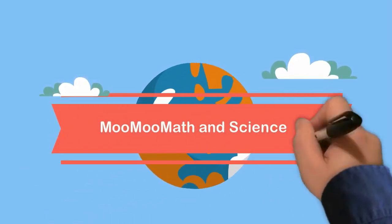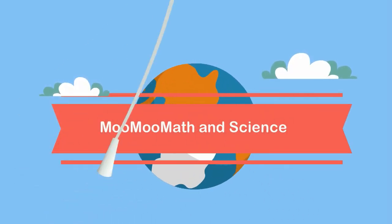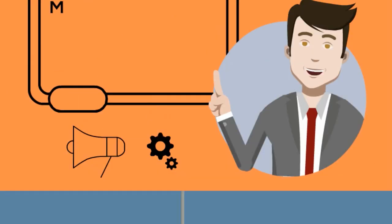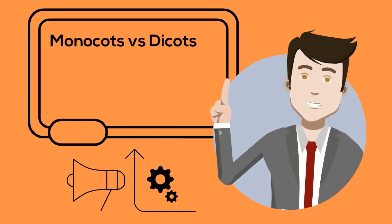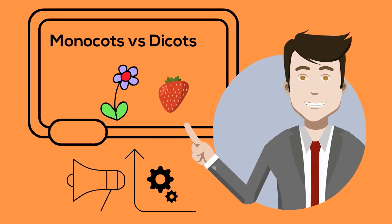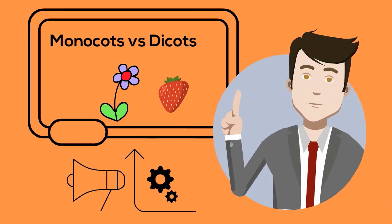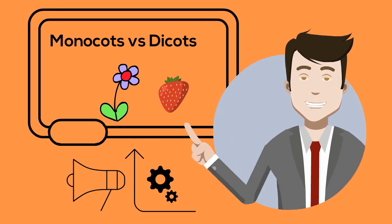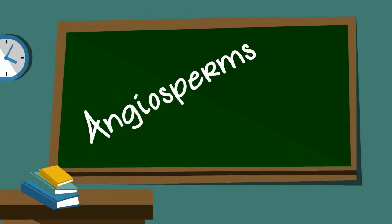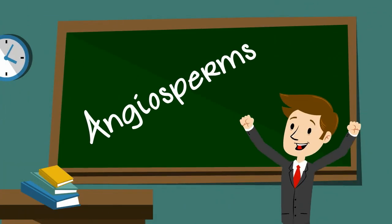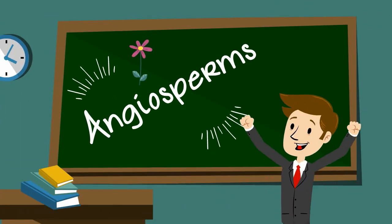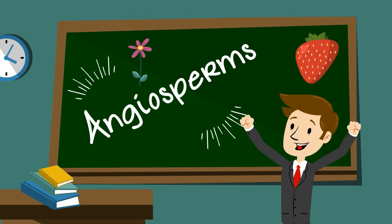Welcome to MooMooMath and Science. In this video I would like to talk about the difference between monocots and dicots. Angiosperms are the types of plants that have flowers and most of them have seeds encased in fruit.